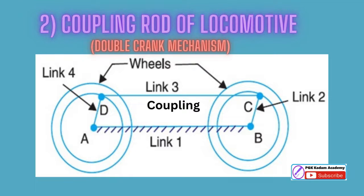The links act as cranks and are connected to the respective wheels. The link CD acts as a coupling rod and the link AB is fixed in order to maintain a constant center-to-center distance between them. This mechanism is meant for transmitting rotary motion from one wheel to the other wheel.